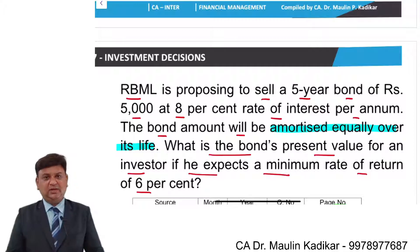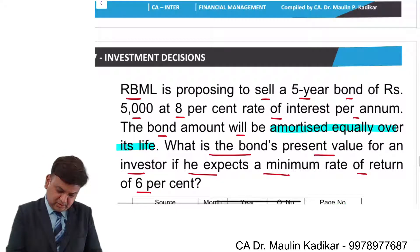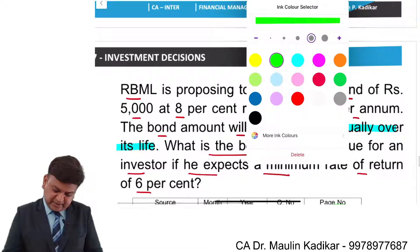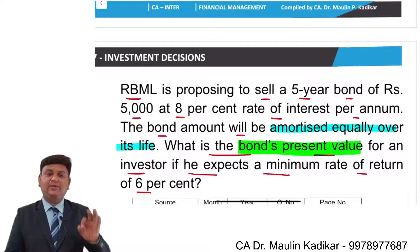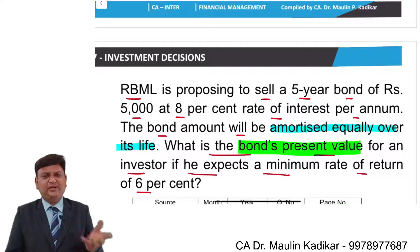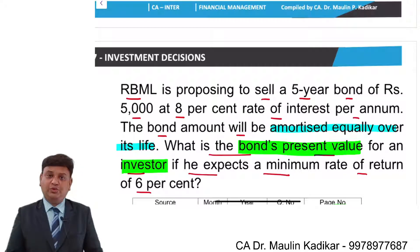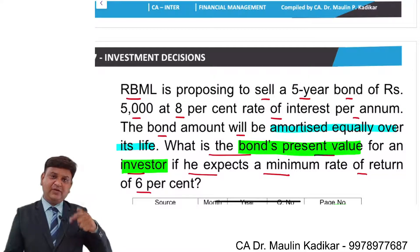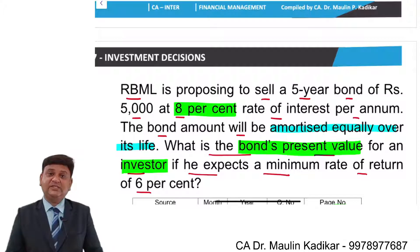Coming back to the question — we are required to compute the bond's present value, which is the price of the bond or debenture that an investor is ready to pay. The rate of interest on the debenture is 8% and the investor's required rate of return is 6%.